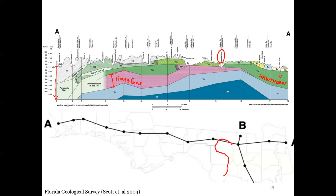In Gainesville specifically, the Hawthorne formation is actually missing — it's right on top of the Suwannee limestone. So you'd hit limestone directly without encountering the weak Hawthorne clay. This means you'd choose a different investigation technique — you wouldn't go out with a technique better suited for clays or sands if you're just going to be hitting rock right away.